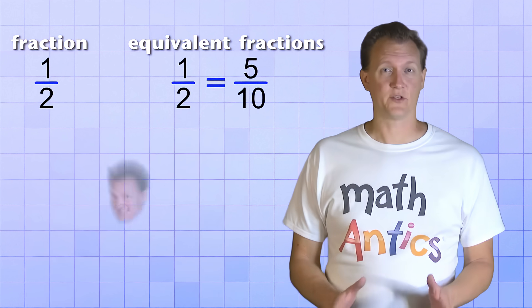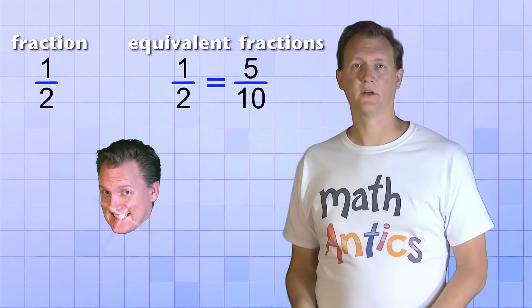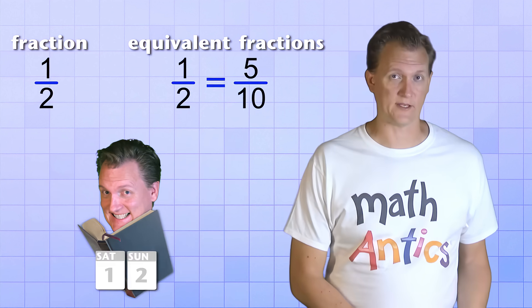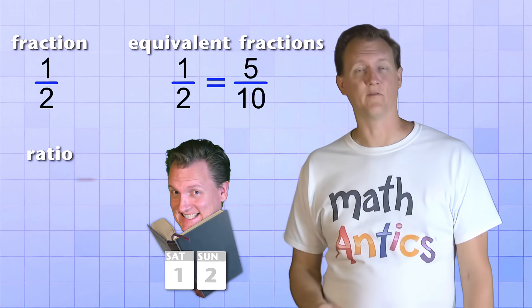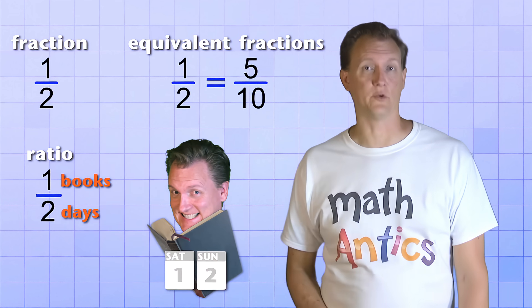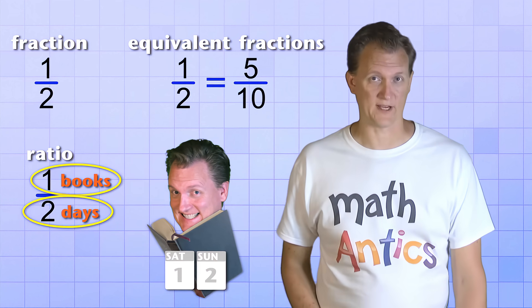So let's imagine that a student who's a really good reader can read one book in two days. We could say that the ratio of books to days is 1 over 2. One book per two days.